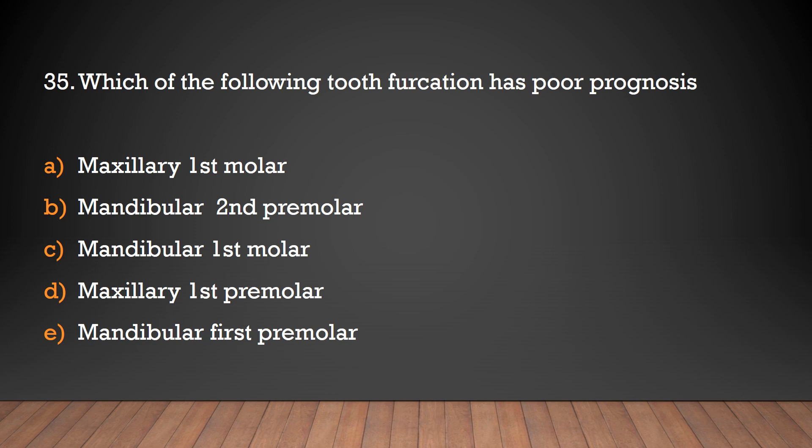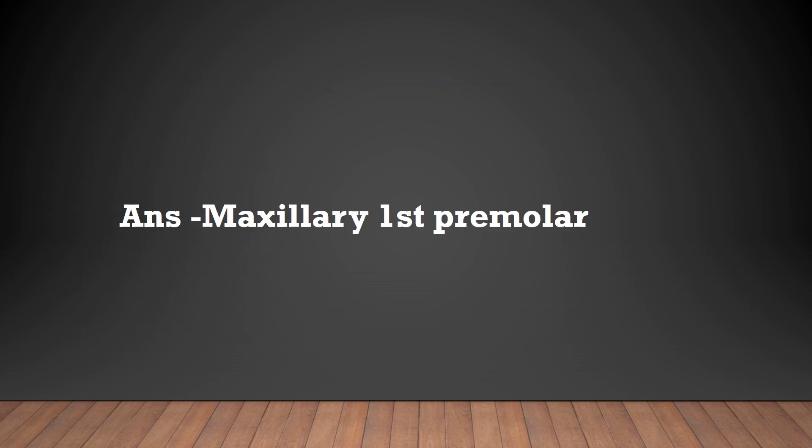Which of the following tooth furcations has a poor prognosis? Maxillary first molar, maxillary second premolar, mandibular first molar, maxillary first premolar, or mandibular first premolar. The answer is maxillary first premolar.